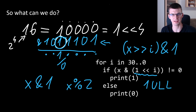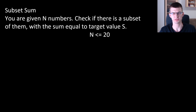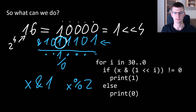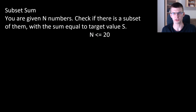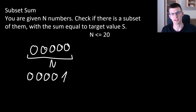Consider this problem: you are given a set of n numbers where n is up to 20, and you need to find a subset whose elements sum to a target value s, where each element can be taken at most once. Iterating over all subsets can be done with recursion, but we'll focus on the iterative version using bitmasks. A bitmask x represents a subset: bit i being 1 means element i is included.